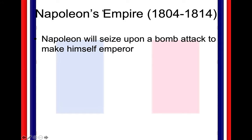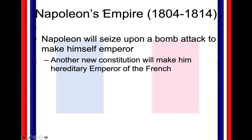Napoleon is going to seize upon a bomb attack to make himself Emperor, similar to what Hitler is going to do with the Reichstag fire when he makes himself the dictator and Chancellor of Nazi Germany. We're going to see another constitution in France to make him the hereditary emperor of France. And this is the big irony of the French Revolution — we had the hereditary monarch with the Bourbon family, and now in the early 1800s, they have a hereditary military dictator, now emperor.